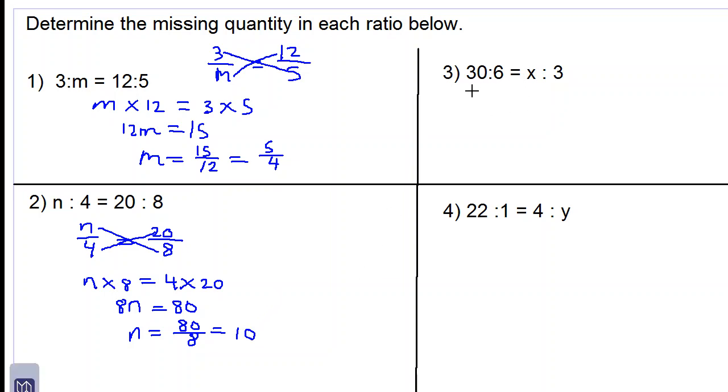Let's move on to number 3. 30 over 6 is equal to x over 3. We have 6 times x being equal to 30 times 3. 6x is equal to 90. We now divide both sides by 6, so we therefore get x is equal to 90 divided by 6. x is therefore equal to 15.